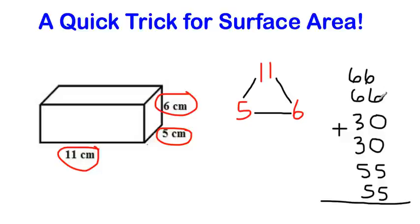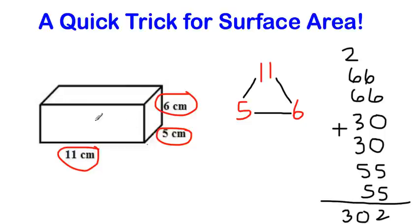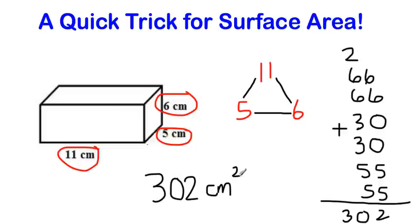Adding up the sides: 66 plus 66 is 132, 30 plus 30 is 60, and 55 plus 55 is 110. Adding those together: 132 plus 60 is 192, plus 110 is 302. So this rectangular prism has a surface area of 302 centimeters squared.